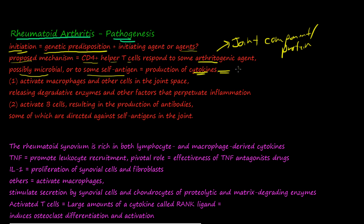Remember that cytokines are messenger molecules. That's all cytokines are - a way for cells to communicate with other cells. What happens is that these cytokines activate macrophages and other cells in the joint space. Once they come to the joint, they release degradative enzymes and other factors that perpetuate inflammation over and over.